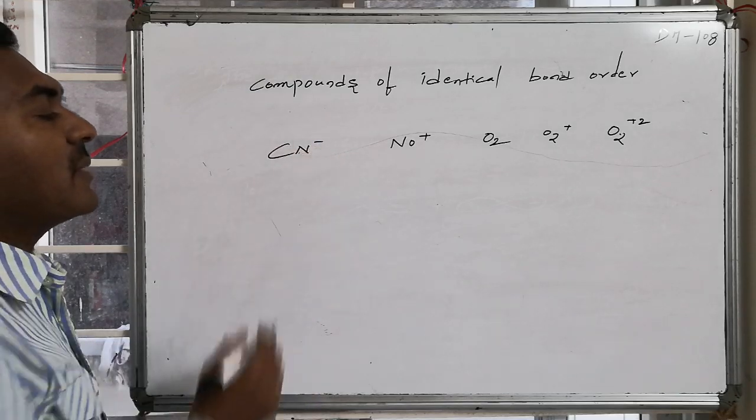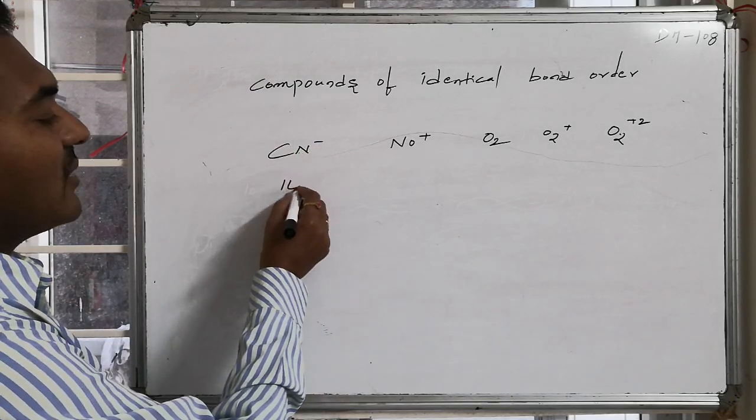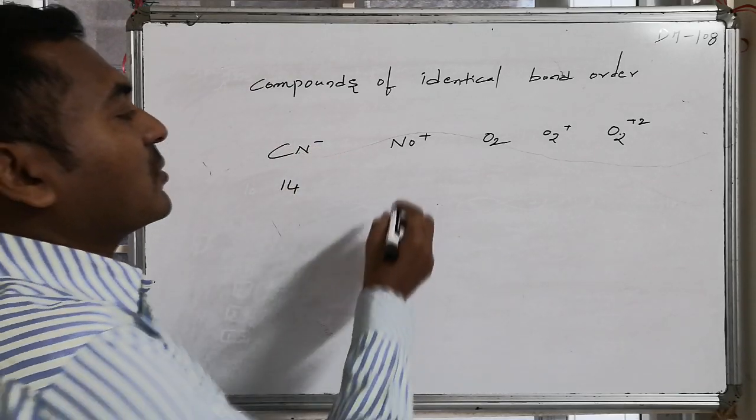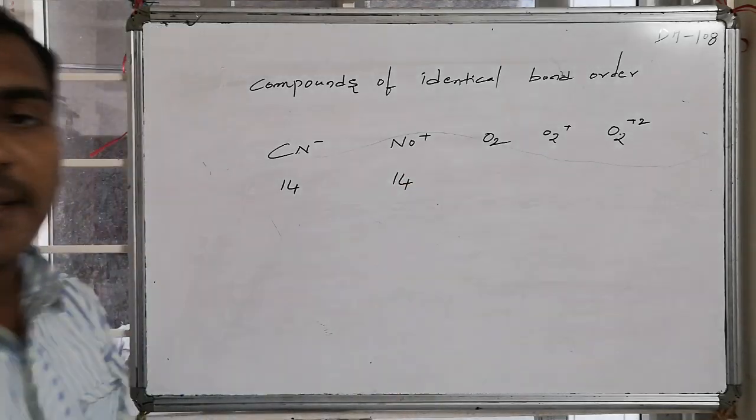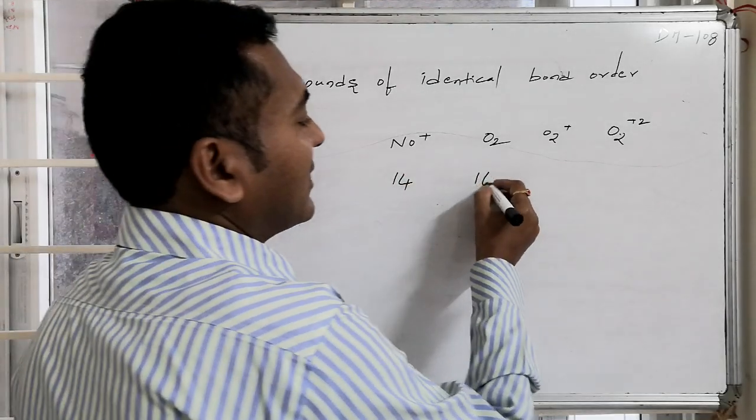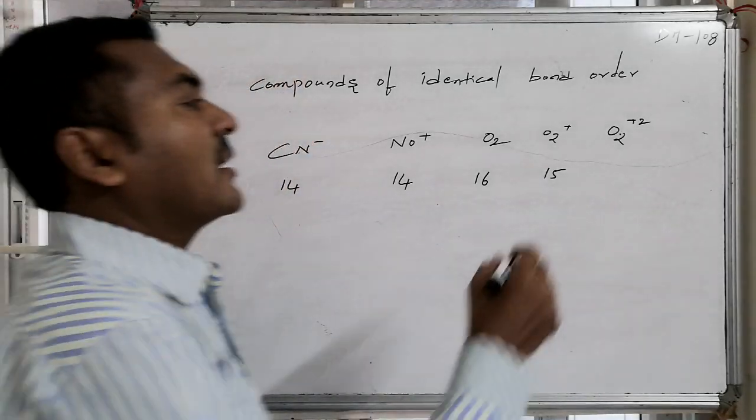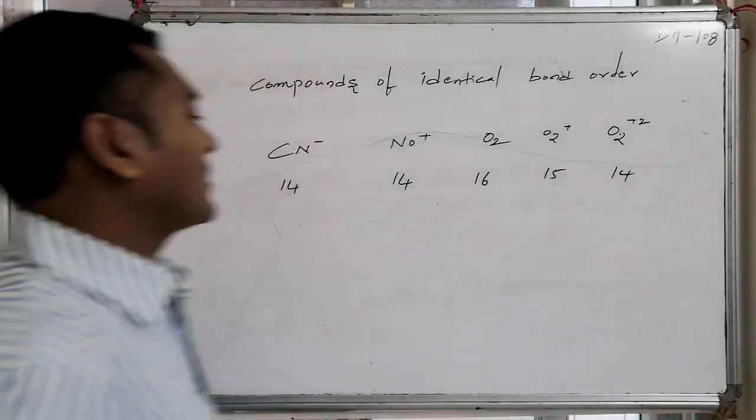Whereas in CN minus, the number of electrons are 14. NO plus, NO plus implies this is also 14 electron system. O2 is 16 electron system, 16 minus 1 is 15, and 15 minus 1 this is 14 electron system.